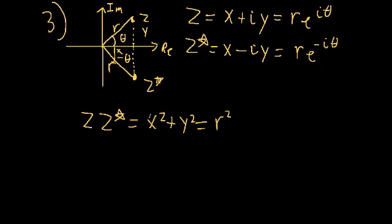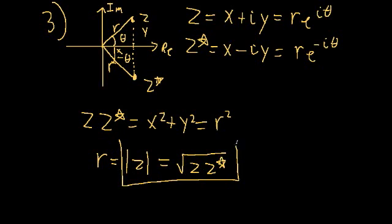So we can rewrite r, which is our absolute value of a complex number, and we can say that this is equal to the square root of the complex number multiplied by its conjugate. And this is fairly handy to keep in mind. The absolute value of the complex number is the square root of that number multiplied by its conjugate.